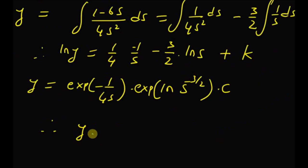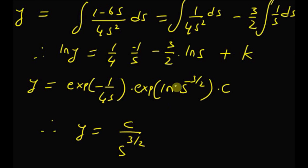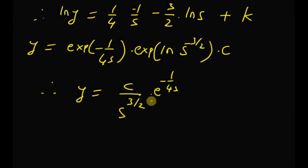Therefore, y = c / s^(3/2) · e^(−1/(4s)). This is the final structure of the Laplace transform of y(t).